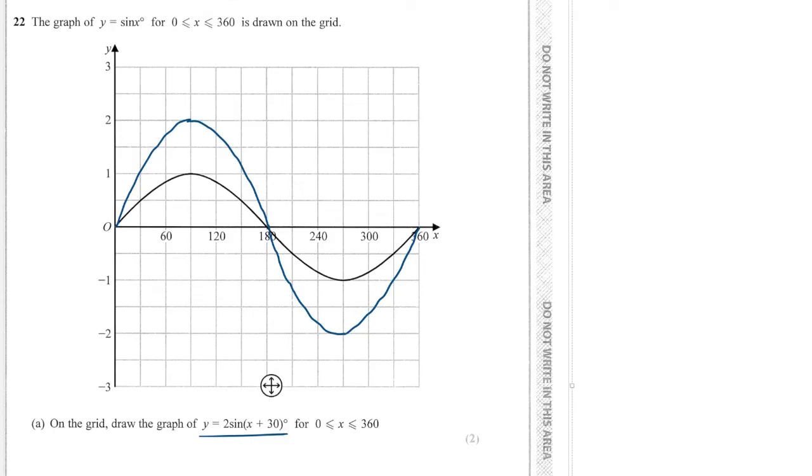And then what I'll need to do is I'll need to move that graph 30 degrees left. So if I pick up this line here, which I'm trying to do, I can't do that. I'm just going to draw it on again. So every coordinate will be 30 degrees to the left. So at 180, it will be over here. At 360, it will be over here. And at the maximum, it will be over here.